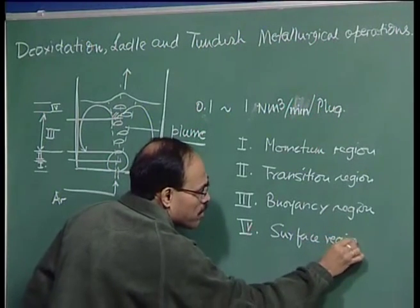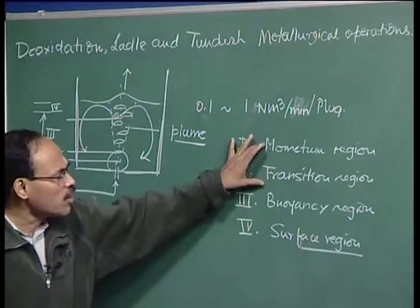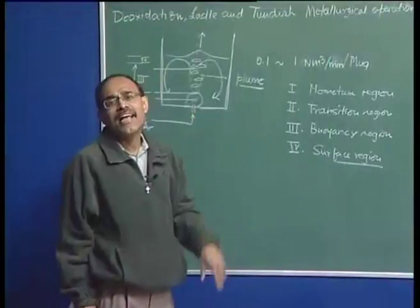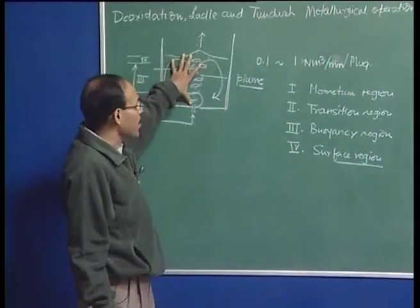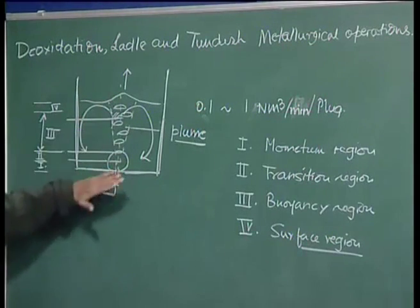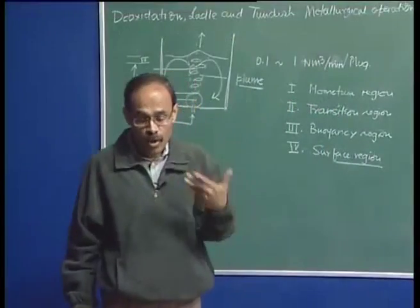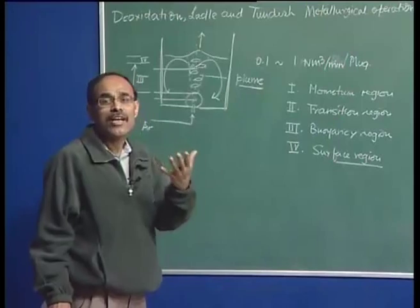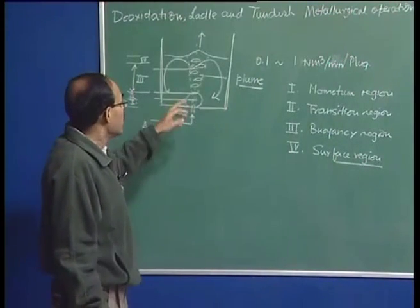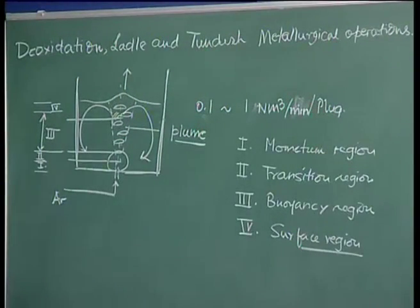This is the way a typical plume develops in a gas-stirred liquid system. The momentum region, transition region, and surface region combined take about 20 to 30 percent of the entire height of the reactor. Region three — the buoyancy region — is where we see nicely dispersed spherical cap bubbles. Spherical cap bubbles are the only shape possible because the thermophysical properties of the system constrain the shape; very small spherical or ellipsoidal bubbles are not possible.